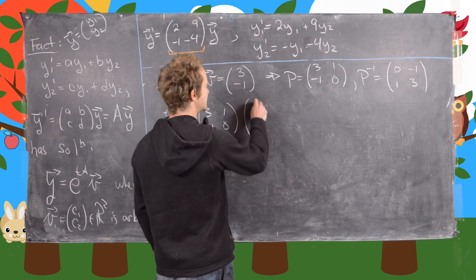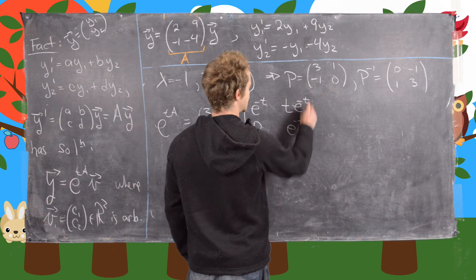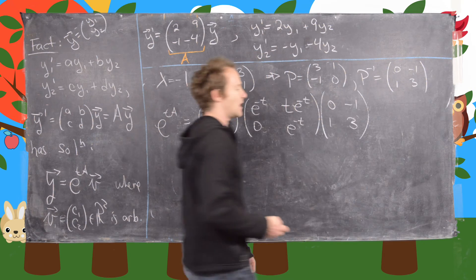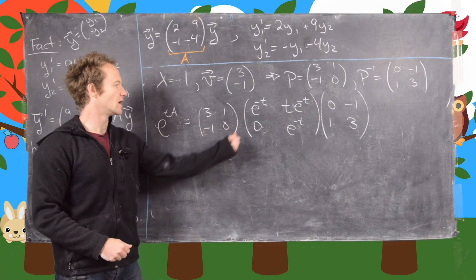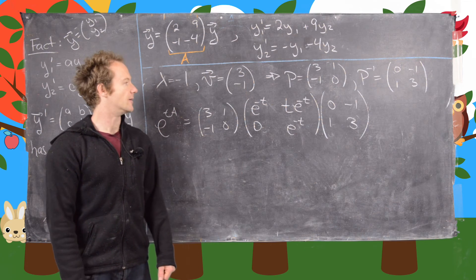And then we'll have e to the minus t, te to the minus t, 0, e to the minus t. And then we'll finally have P inverse, which is as follows. So again, I'm skipping some steps here, but I've got some videos where we go over this type of exponential where we have a single eigenvalue.